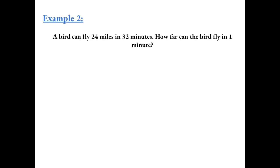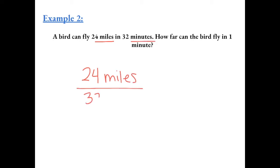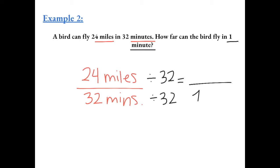Example 2: A bird can fly 24 miles in 32 minutes. How far can the bird fly in 1 minute? Let's first write it as a fraction: 24 miles in 32 minutes. We want a denominator of 1, so we need to divide by 32 to get 1 minute in the denominator.